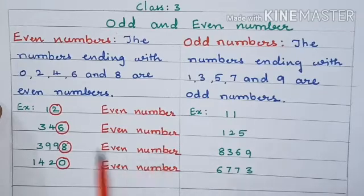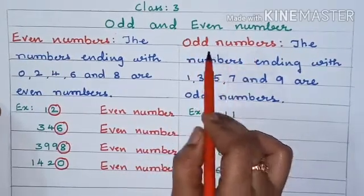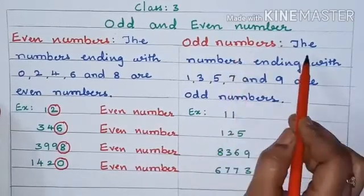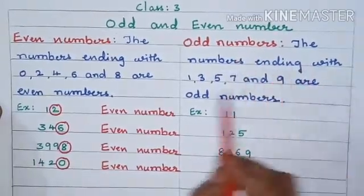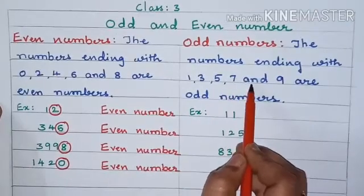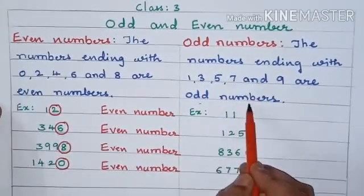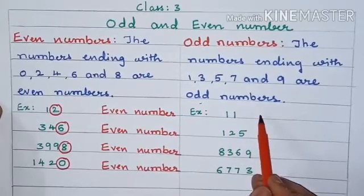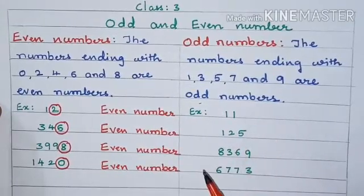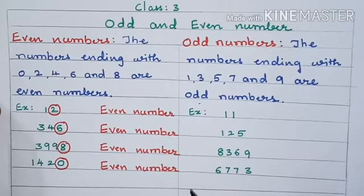Now let us understand the concept of odd numbers. What is an odd number? The numbers ending with 1, 3, 5, 7, and 9 are odd numbers. Or else we can say, when we divide the number by 2, if the remainder is 1 — meaning the remainder comes 1 — then the number is odd.